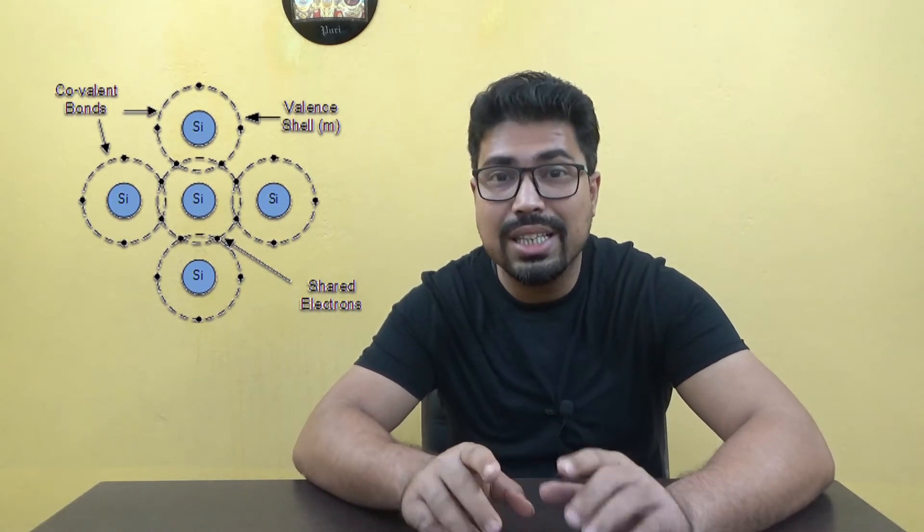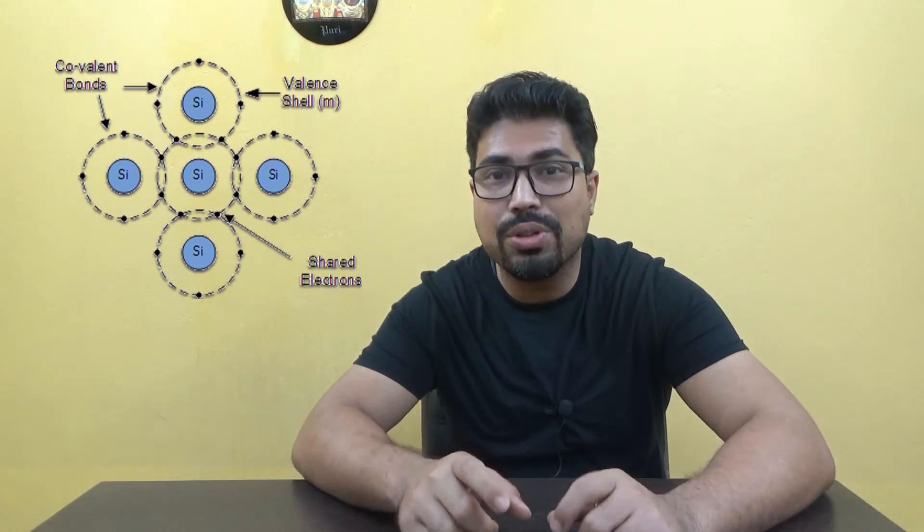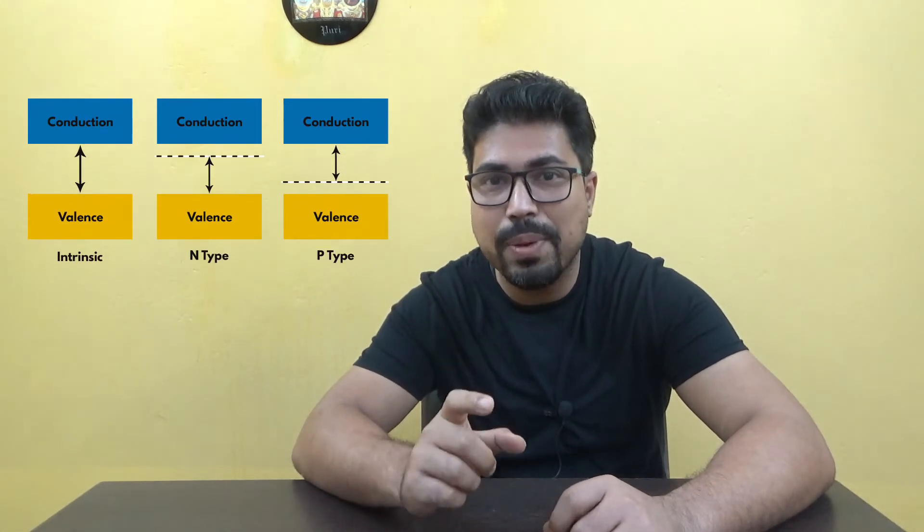A semiconductor has both the properties of a conductor and an insulator. If you look at the atomic structure of an ideal semiconductor, you will see there are no free electrons, and also the band gap between the valence band and conduction band is very high.